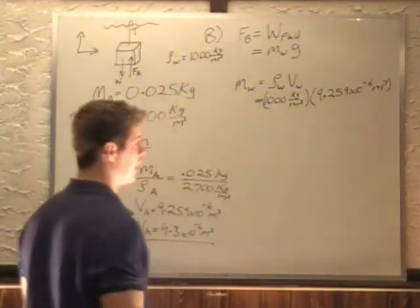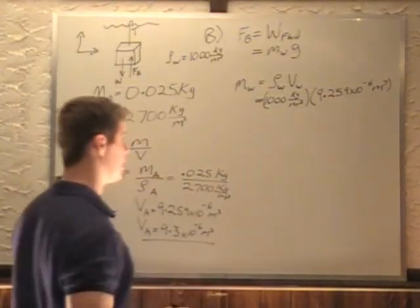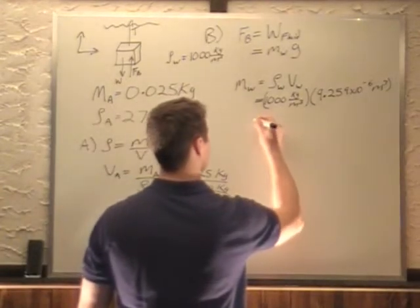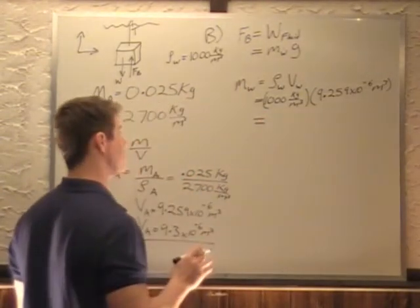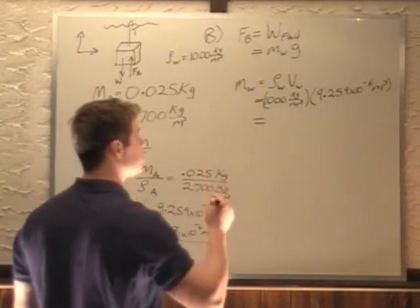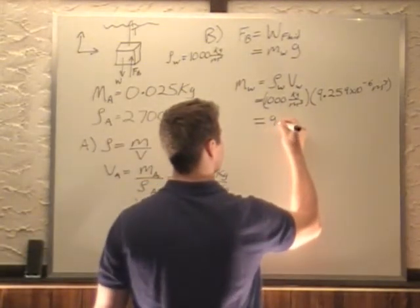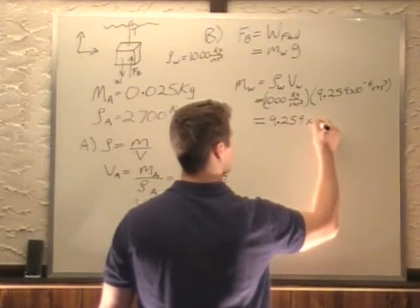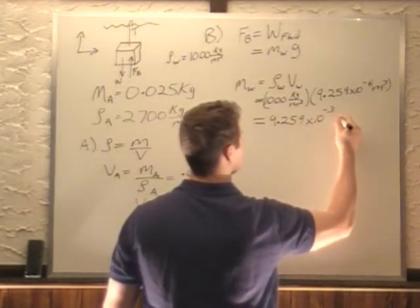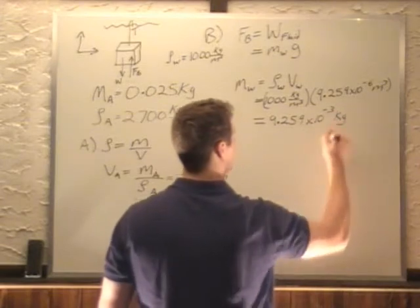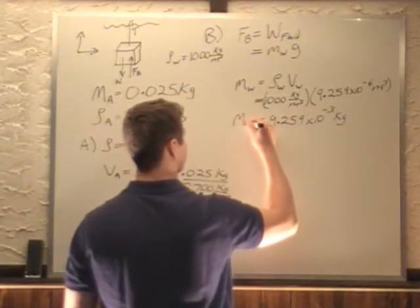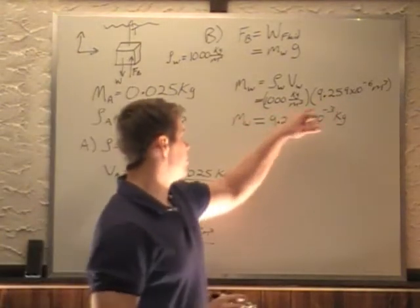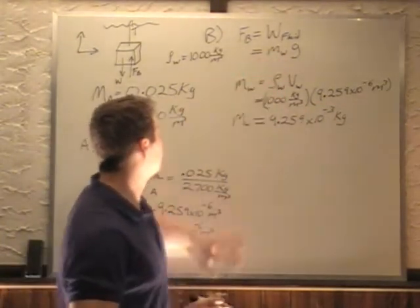Notice that I used that, I kept all the digits in there, and I didn't use the 9.3. You always want to do that in intermediate calculations, leave all the decimal places you can. So I multiply those two together: 9.259 times 10 to the minus 3 kilograms. That's the mass of water that gets moved. Meters cubed cancel, leaves us with kilograms.